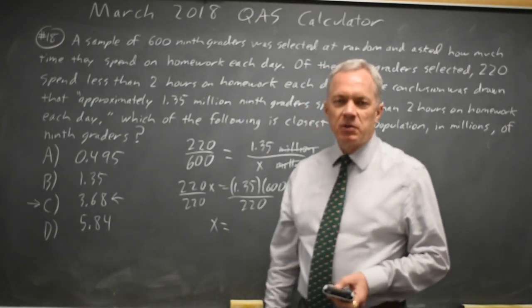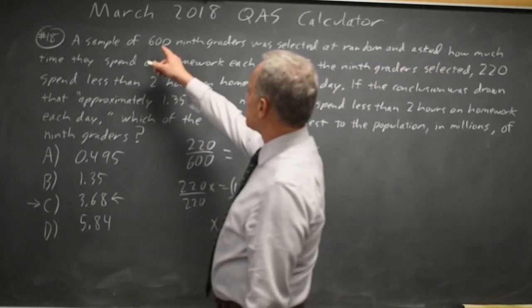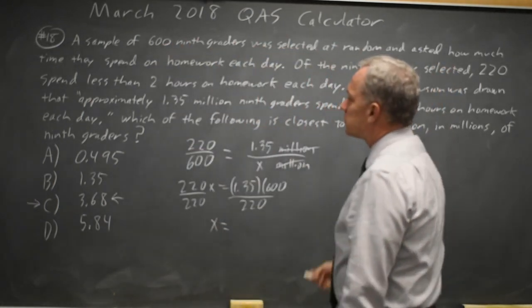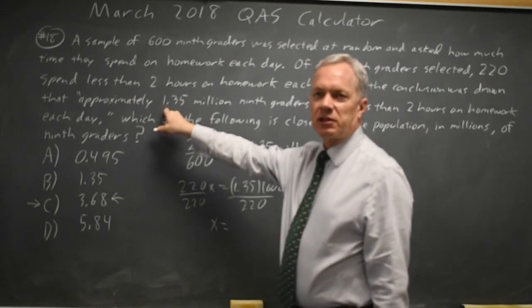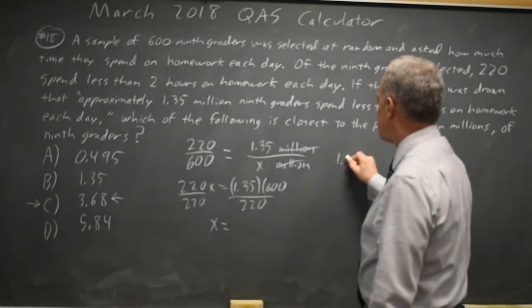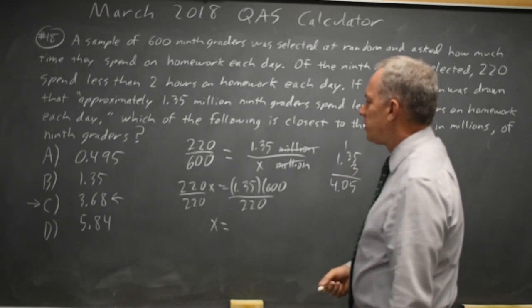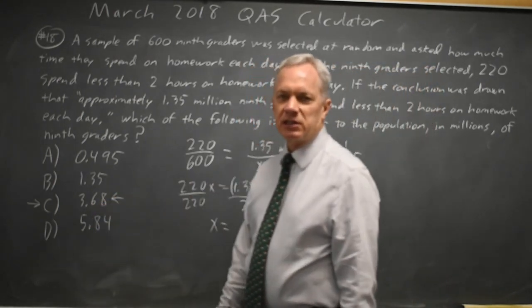Alternatively, we could have done this without a calculator because 600 is a little less than 3 times 220, so the correct answer should be a little less than 3 times 1.35, and 3 times 1.35 is 4.05. The number is slightly less than that would be choice C.